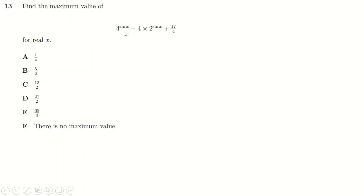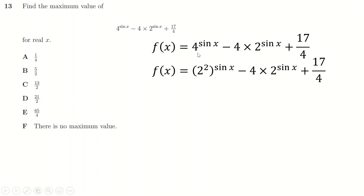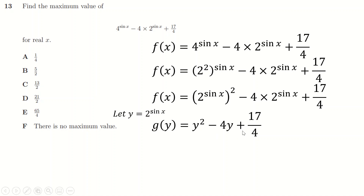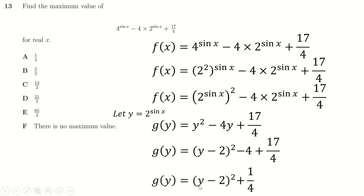Question thirteen: find the maximum value. I rewrite 2 as a and 4 as a², swapping the multiplication order to reveal a quadratic in the substitution a = 2^(sin x). Writing as y = 2^(sin x), the expression becomes a quadratic y² - 4y + (number). I complete the square: y² - 4y = (y-2)² - 4, giving the expression in completed-square form with minimum when y = 2.